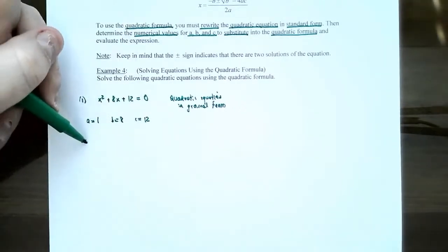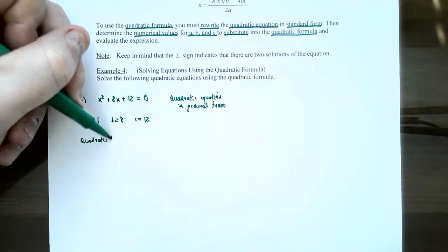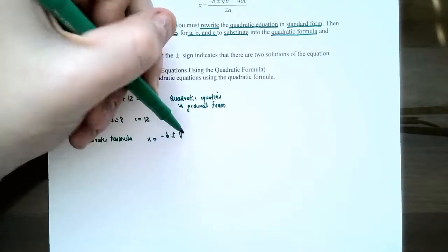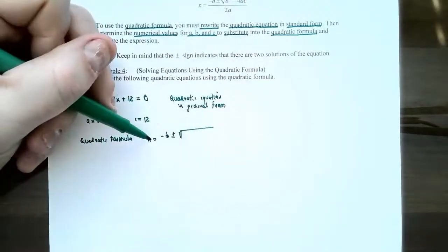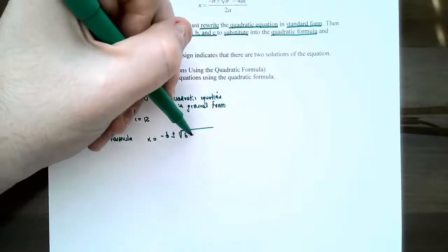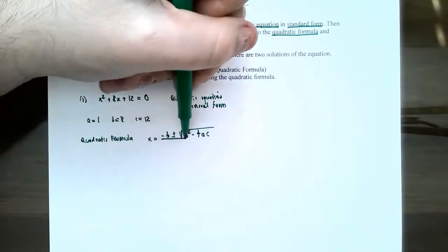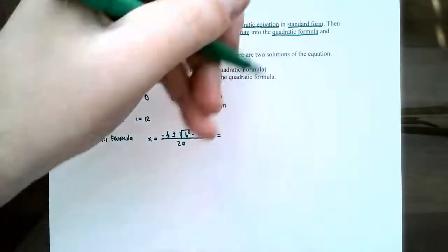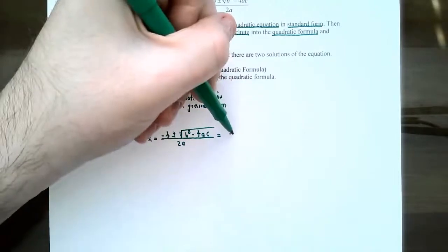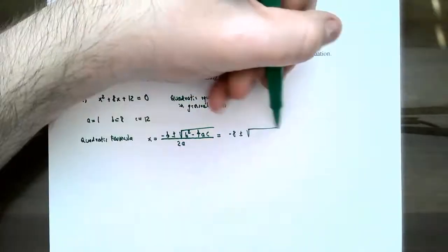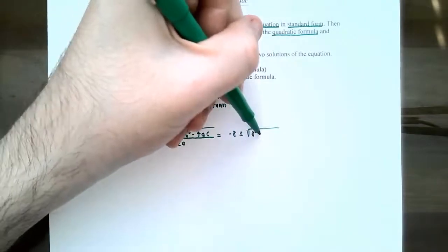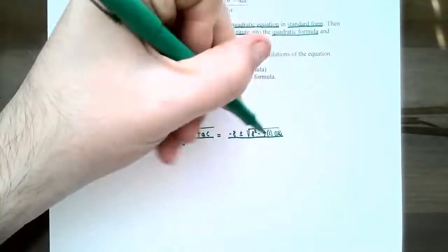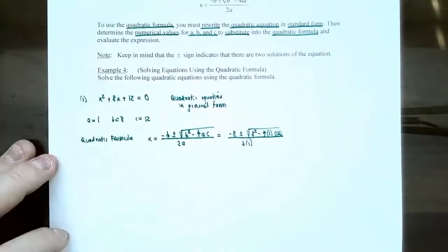It's a very good habit to write out the formula first, then substitute in a, b, and c. The quadratic formula says x equals the opposite of b plus or minus the square root of b squared minus 4 times a times c, all divided by 2 times a. Substituting: the opposite of b is negative 8, plus or minus the square root of 8 squared minus 4 times 1 times 12, all divided by 2 times 1.